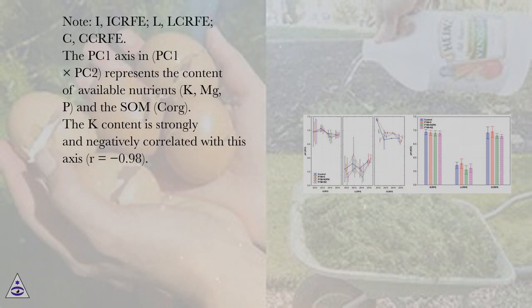Note: I (I-KERF), L (L-KERF), C (C-KERF). The PC1 axis in PC1×PC2 represents the content of available nutrients (K, Mg, P) and the SOM (CORG).